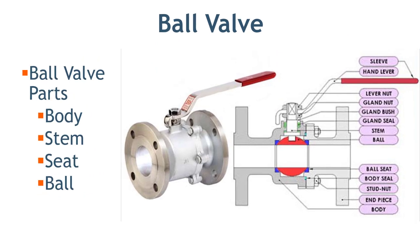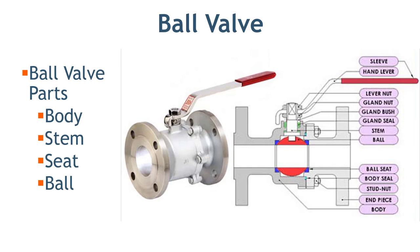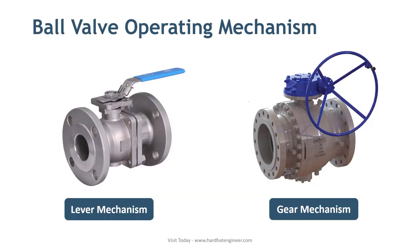The ball valve, like the one shown in this slide, is a positive shutoff valve. The operating mechanism of the ball valve is very simple. By just rotating the lever 90 degrees, which is connected with the ball-type disc through the stem, this valve can be fully closed or fully open. That is why it is called a quarter-turn rotary motion valve.